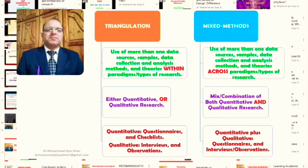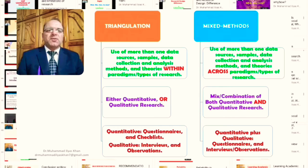But the difference is that the use of more than one data sources, samples, data collection and analysis methods and theories in triangulation is actually within the paradigms or types of research. In triangulation, we make use of a variety of data collection sources, samples, data collection and analysis methods and theories within a single paradigm or within a single research type.